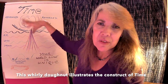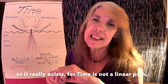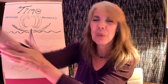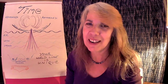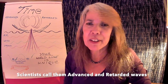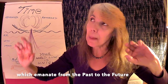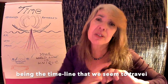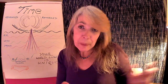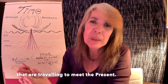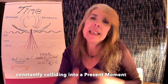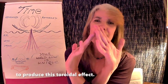I've got the construct of time essentially as it really exists, because it doesn't exist in a line. There isn't an arrow of time pointing from past to future in one straight, narrow road — it doesn't work like that at all. Time is essentially a torus of waves. In science, they're called advanced and retarded waves, and that essentially means waves that come from the past to the future, which is the timeline that we seem to travel in our reality. And equally, there are waves from the future to the past that are travelling to meet the present. So this toroid system has past and future constantly colliding in a present moment to produce this torus.